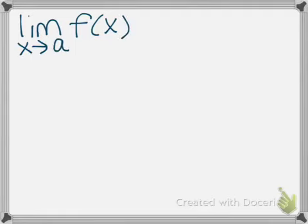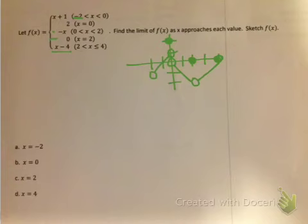Maybe you're thinking the graph cannot jump. Now we're going to look at a piecewise graph already drawn — x plus 1, 2, negative x, 0, x minus 4 — to get the idea of when a limit would not exist and what other scenarios exist. This is the graph of that piecewise function.